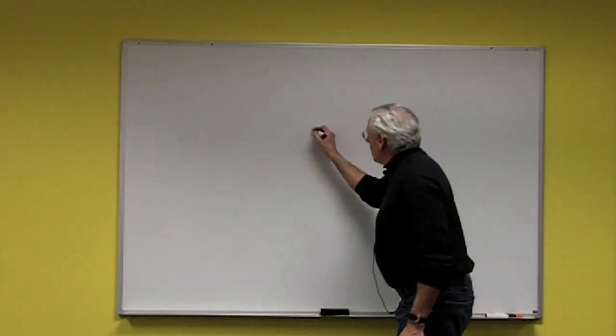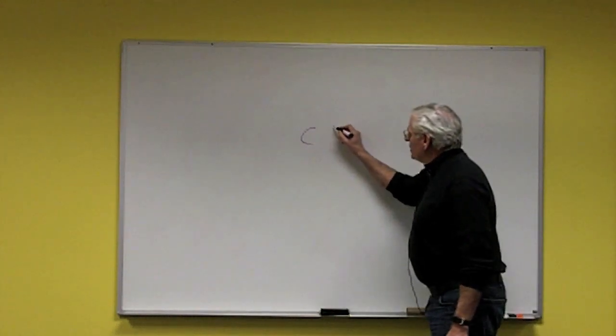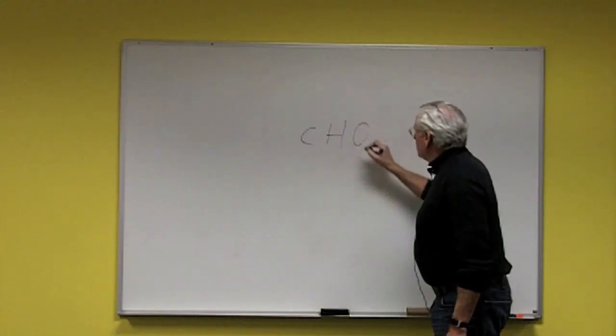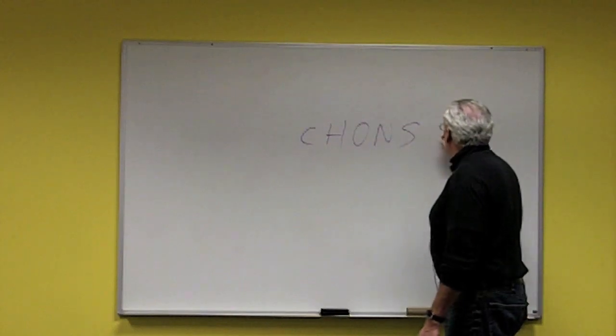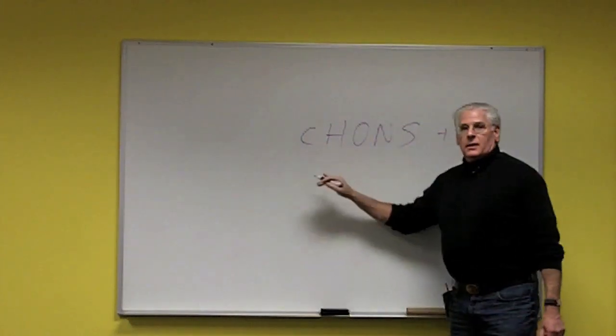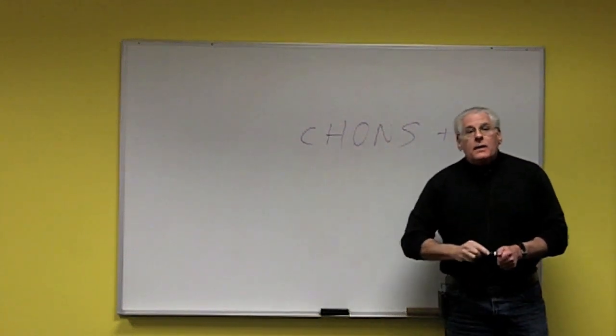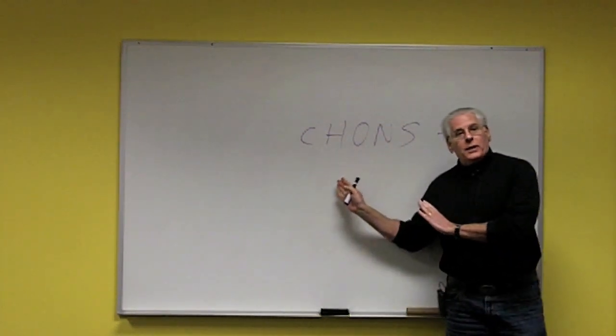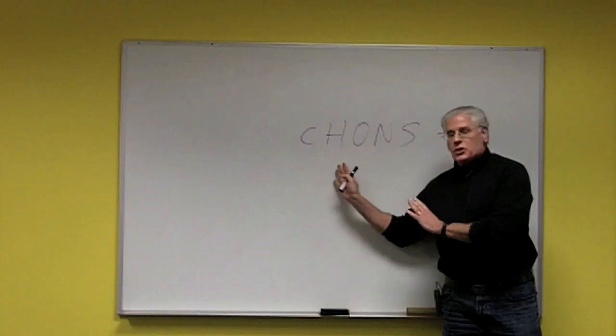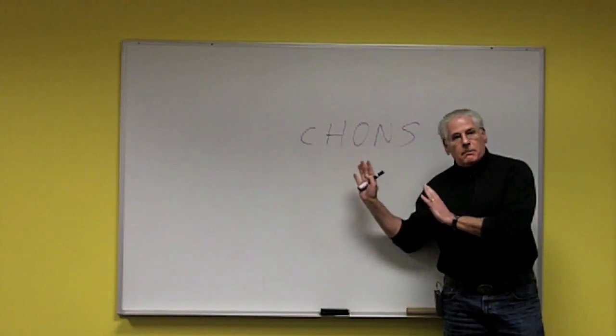We use carbon, hydrogen, oxygen, nitrogen, sulfur, and phosphorus. The acronym for this is CHONS, and the fact that our metalworking fluid chemistries are made out of the same CHONS as microbes,